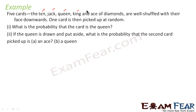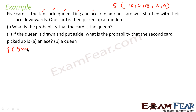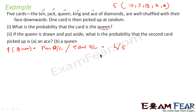Let's take one more question — a card problem. Five cards: 10, Jack, Queen, King, and Ace of diamonds are placed face down. One card is picked. The total number of cards is 5. The first question: find the probability of drawing the Queen card. Using the formula — favorable outcome by total outcome — favorable outcome for Queen is 1 because there is only one Queen, and total number of outcomes is 5. So probability of Queen is 1 by 5.